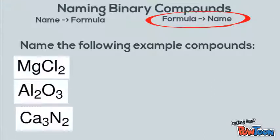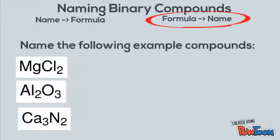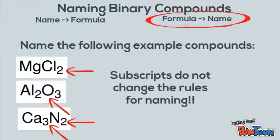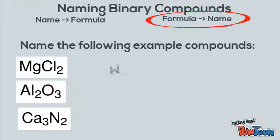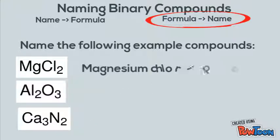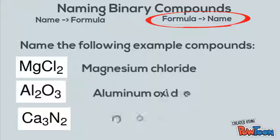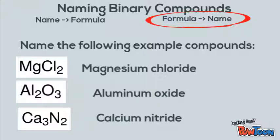Name the following examples. Remember, subscripts do not change the rules for naming. The first one is magnesium chloride, the second is aluminum oxide, and the third is calcium nitride.